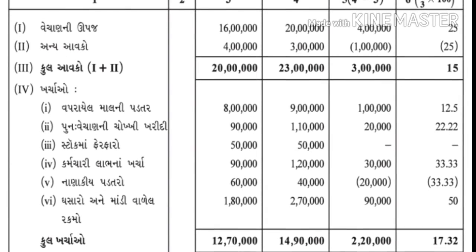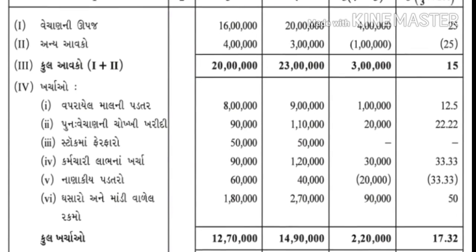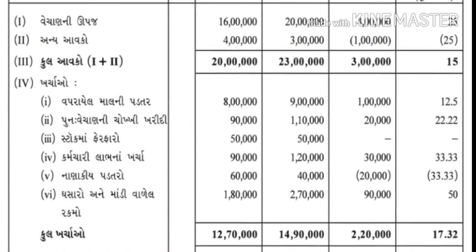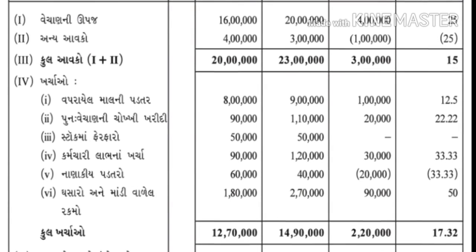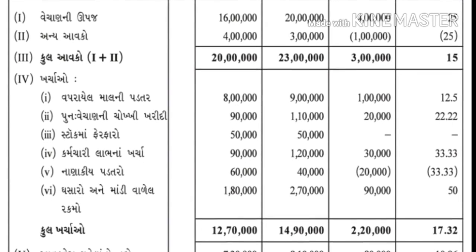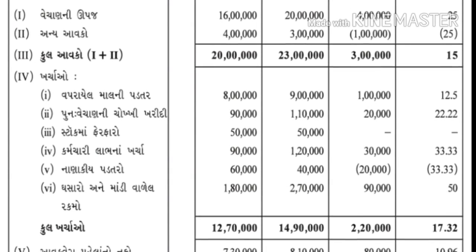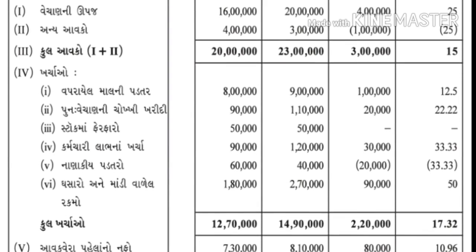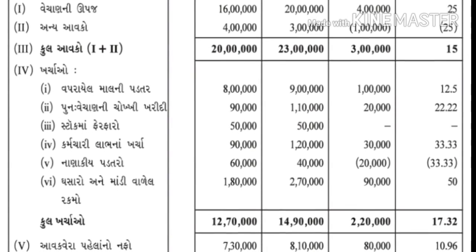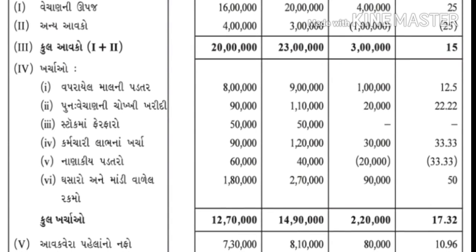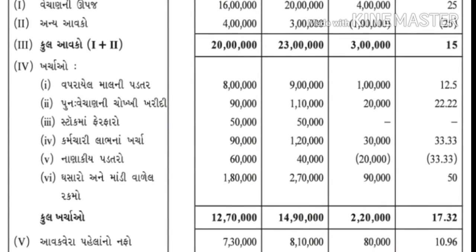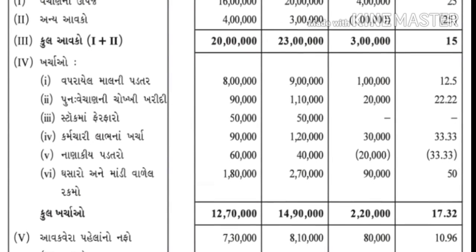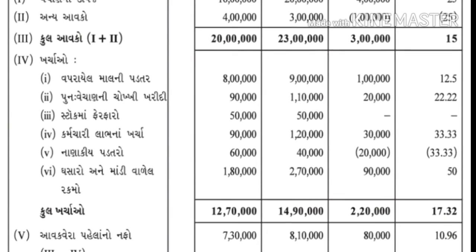2016ની અંદર 70 હજાર, 2017ની અંદર 70 હજાર. ખસારો અને માંડી વળેલ રકમ - ત્યાં. બધા ખર્ચાઓનો સરવાળો - 2016ની અંદર કુલ ખર્ચ 12 લાખ 70 હજાર, 2017ની અંદર કુલ ખર્ચ 14 લાખ 90 હજાર.